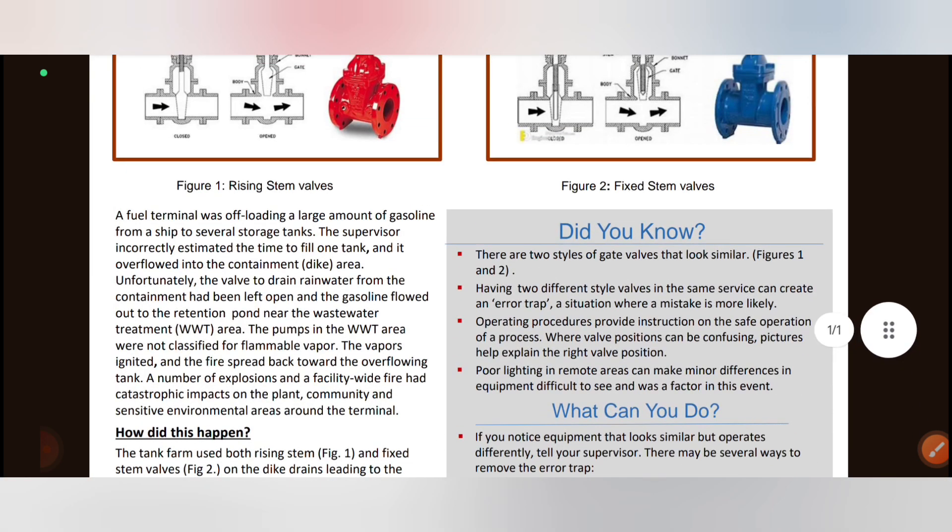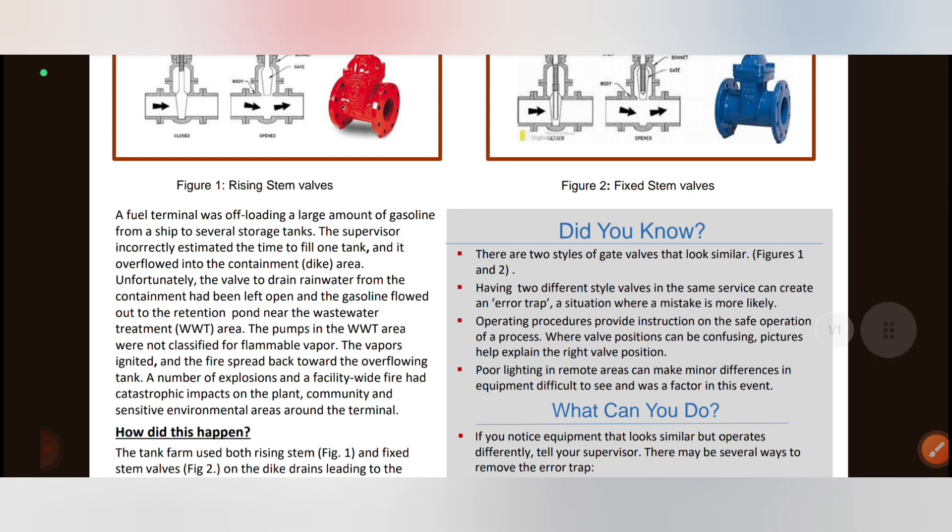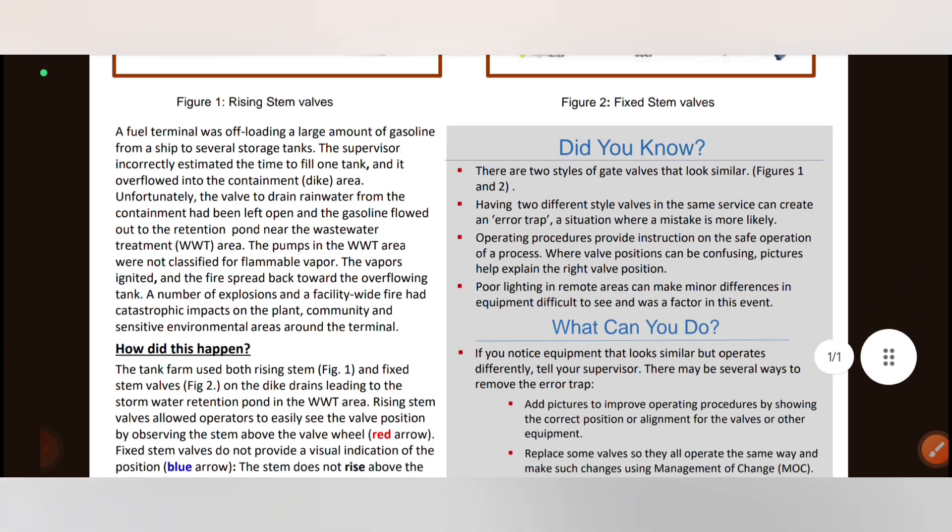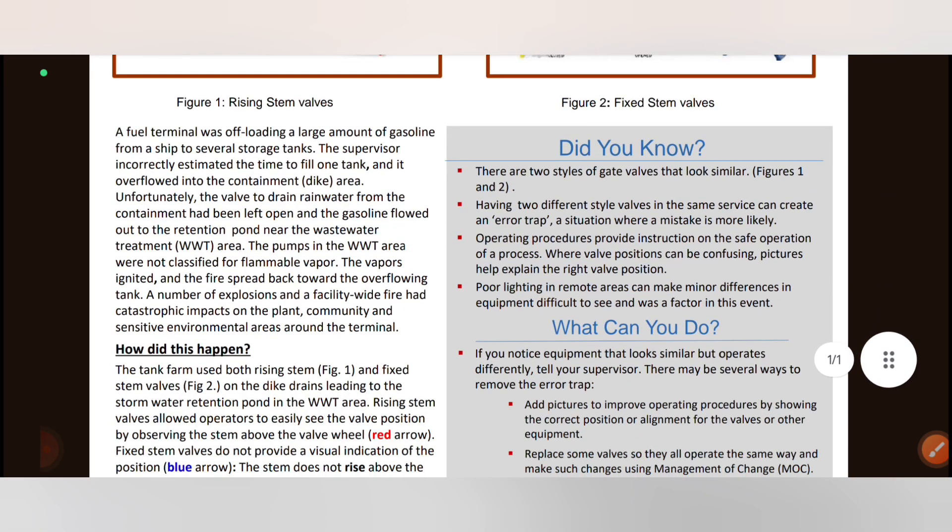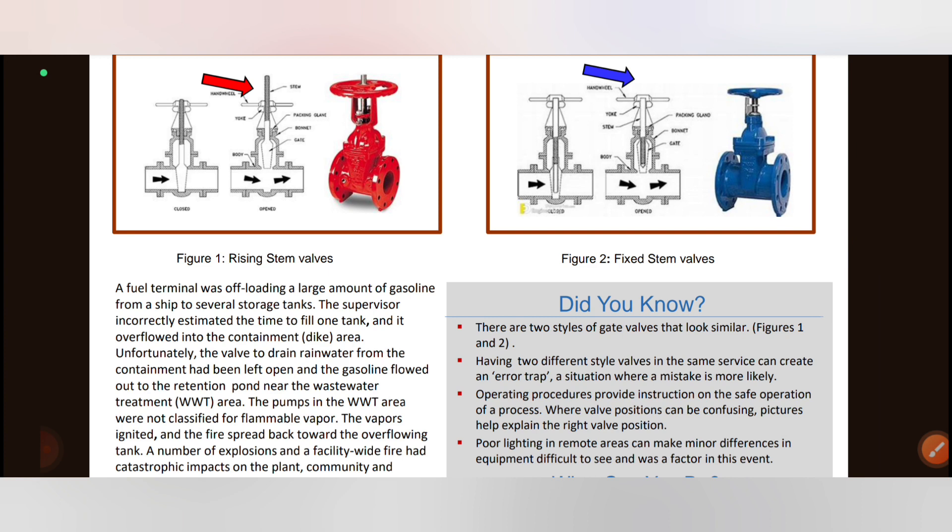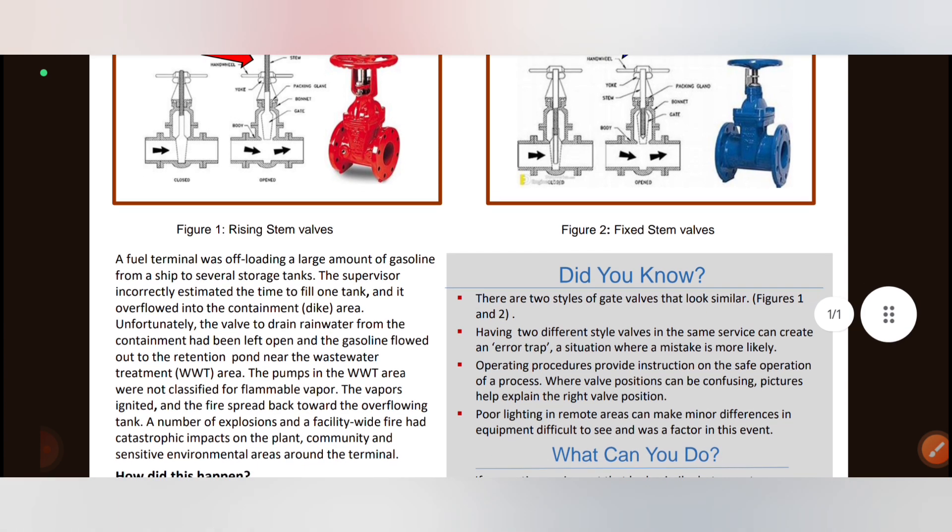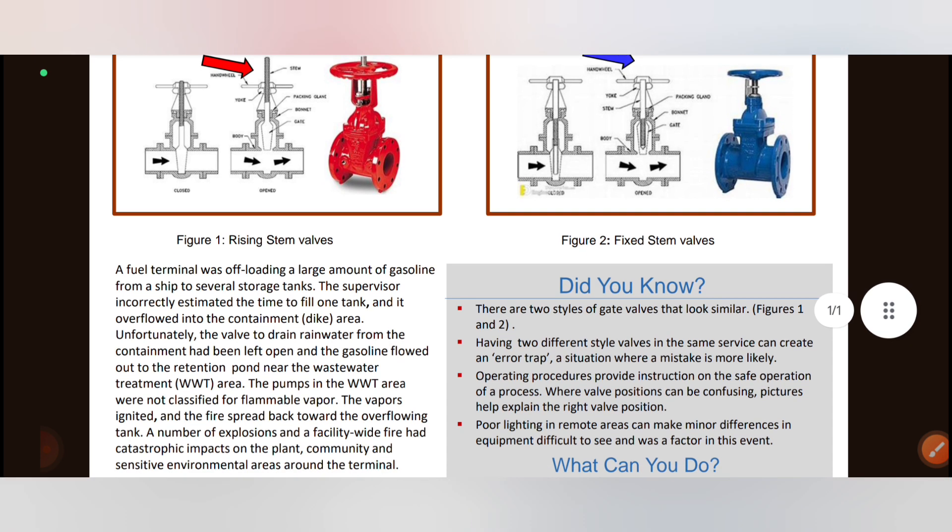When the valve was opened, gasoline flowed from the tank through the dike drain to the wastewater treatment plant. This was the wrong valve opened. So, the mistake was thinking they were closing the valve, but there was no visual indication. If you use this equipment, you can fall into error traps.